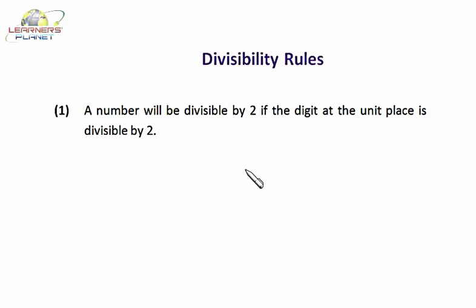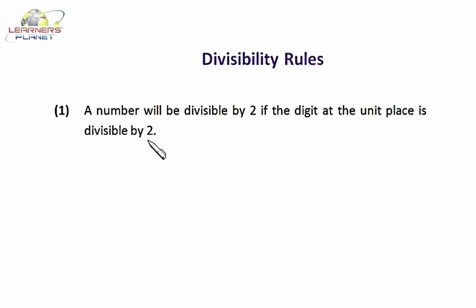First of all, let's see the divisibility test of 2. We can say the divisibility test or divisibility rule. A number will be divisible by 2 if the digit at the units place is divisible by 2. In other words, we can say a number will be divisible by 2 if it is an even number.